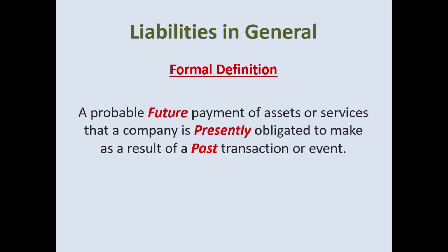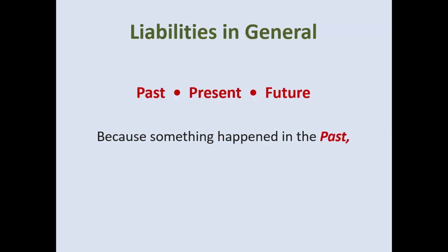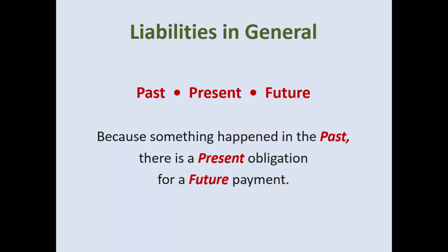The formal definition is a probable future payment of assets or services that you presently owe because of a past transaction or event — past, present, and future. Because something happened in the past, there is a present obligation for a future payment. You need to know this definition. And that is an overview of current liabilities.